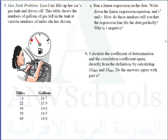Miles is the independent variable. When miles driven is 6, the gallons left is 16.7. For 22 miles, gallons left is 15.9. For 44 miles, gallons left is 14.8. For 50 miles, it's 14.5. And for 60 miles driven, there would be 14.0 gallons of gas left in the tank.